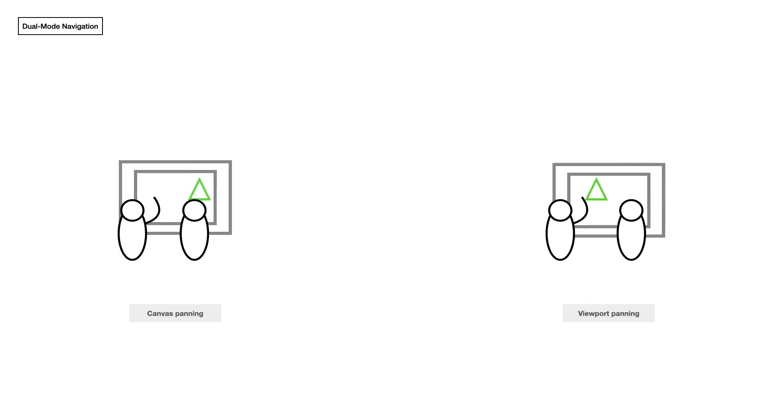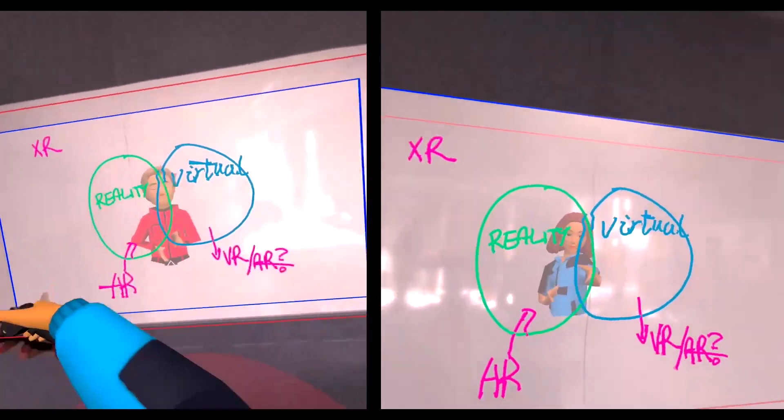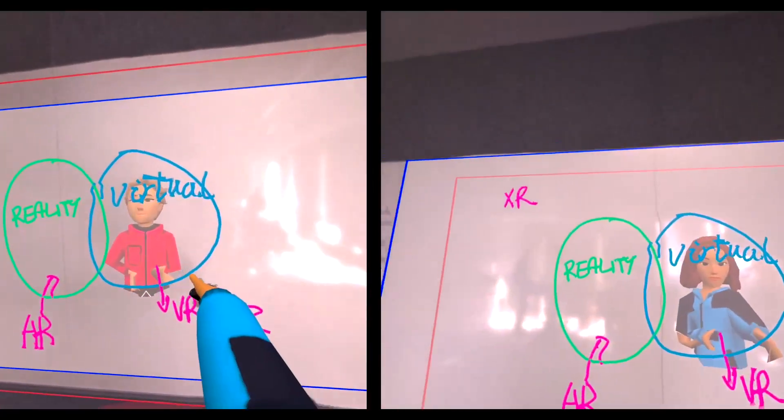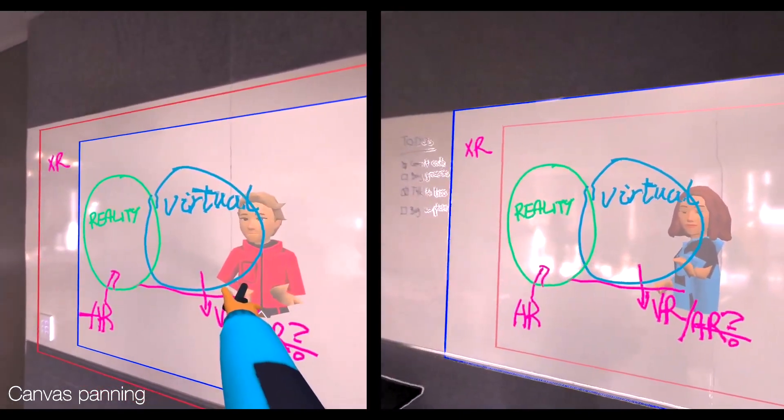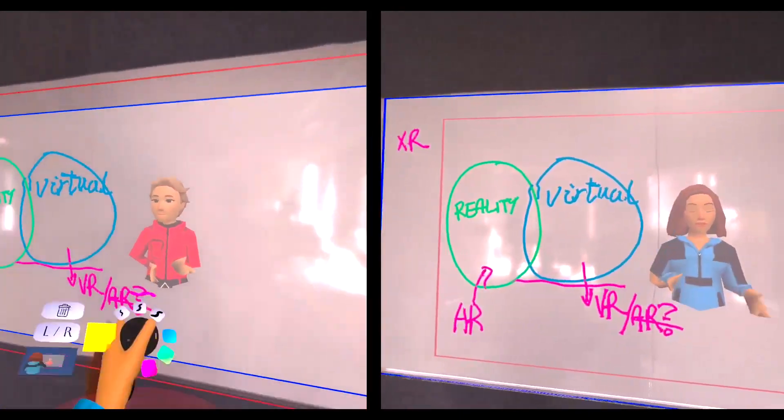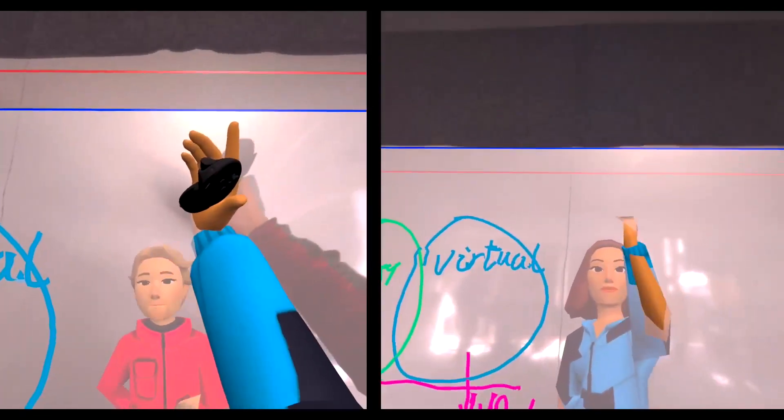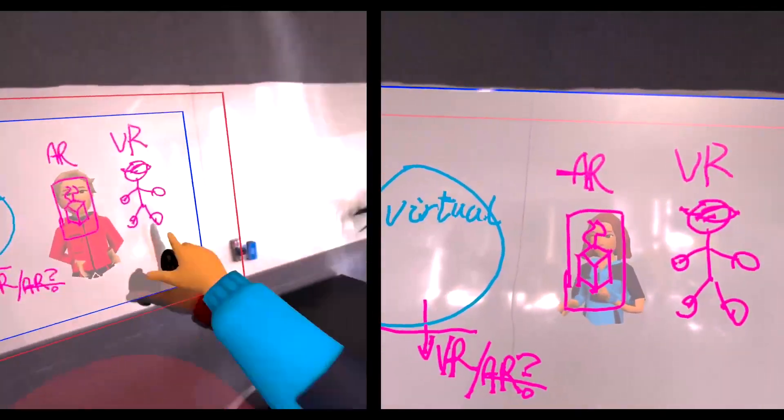The second principle is that content can be navigated through either shared or individual control. Alice and Bob's local surfaces work as physical viewports into an infinite canvas. When they cooperate closely, Alice and Bob can pan the canvas and see changes synchronized across views. But when they work independently, they should be able to navigate individually.